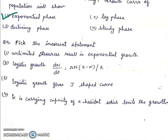Question 9: Pick the incorrect statement. First, unlimited resources result in exponential growth. Second, logistic growth: dn by dt equals Rn, k minus n over k. Third, logistic growth gives j-shaped curve. Fourth, k is carrying capacity of a habitat which limits the growth. Right answer will be third, logistic growth gives j-shaped curve. This is wrong statement because logistic growth gives s-shaped curve.